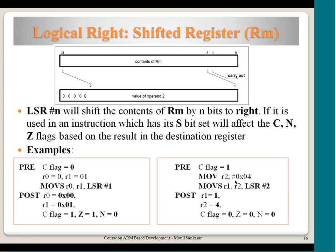Another LSR example: R2 is filled with 4 (0x00000004, i.e., binary 100). Shifting right by 2 positions: 100 becomes 001, which is 1. So R1 becomes 1. R2 remains 4. The carry flag: what shifted out was 0 (the LSBs of 100 are 0), so carry flag becomes 0 (since S is set). Z flag is 0 because the result is 1, and N flag is 0.